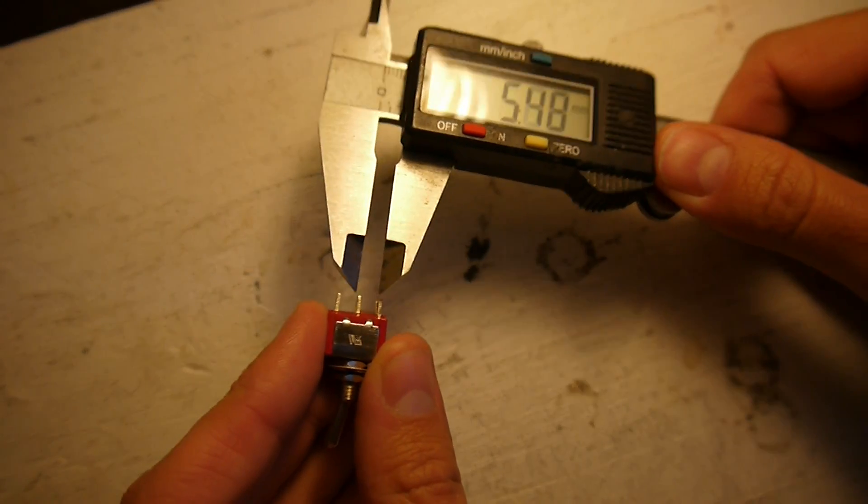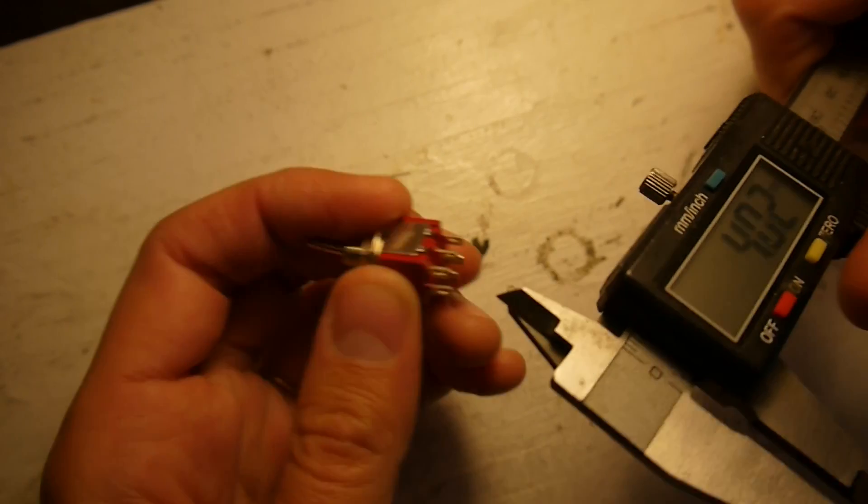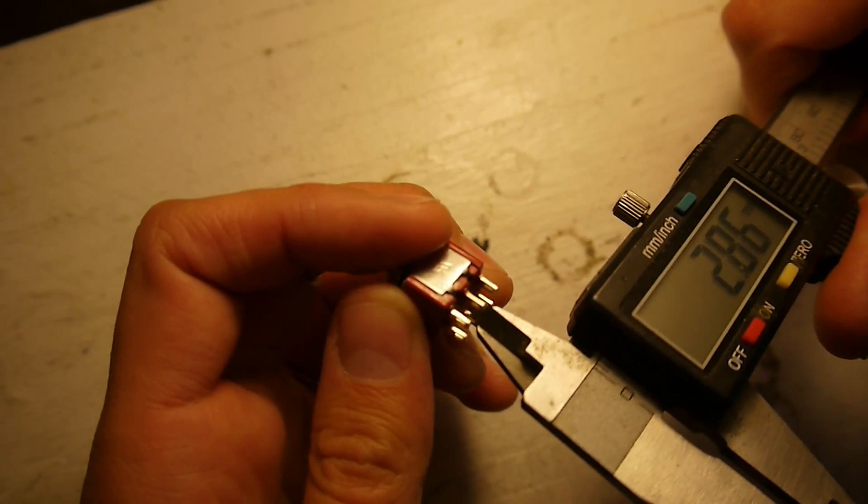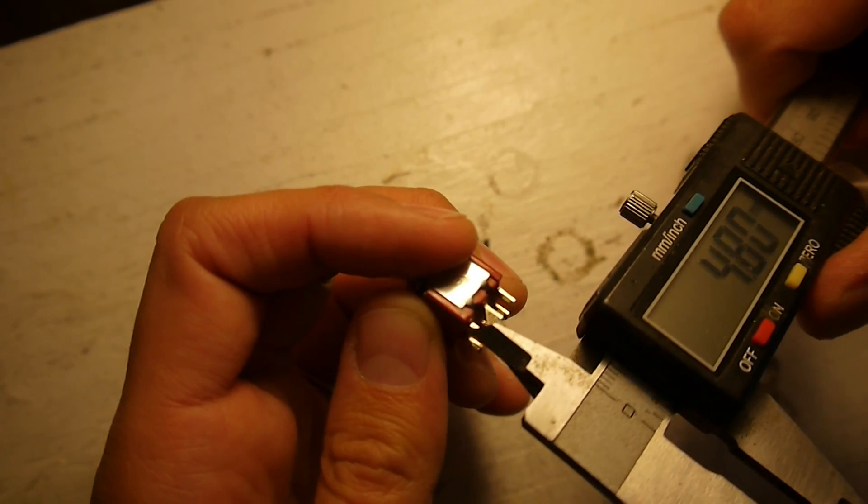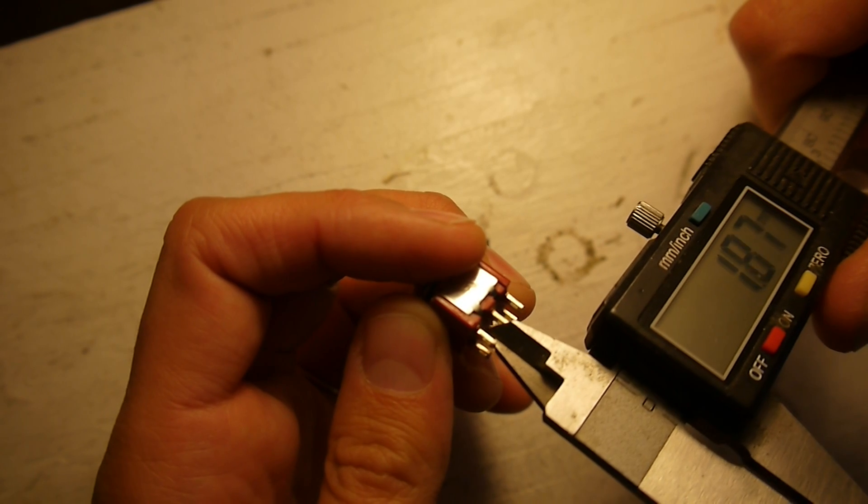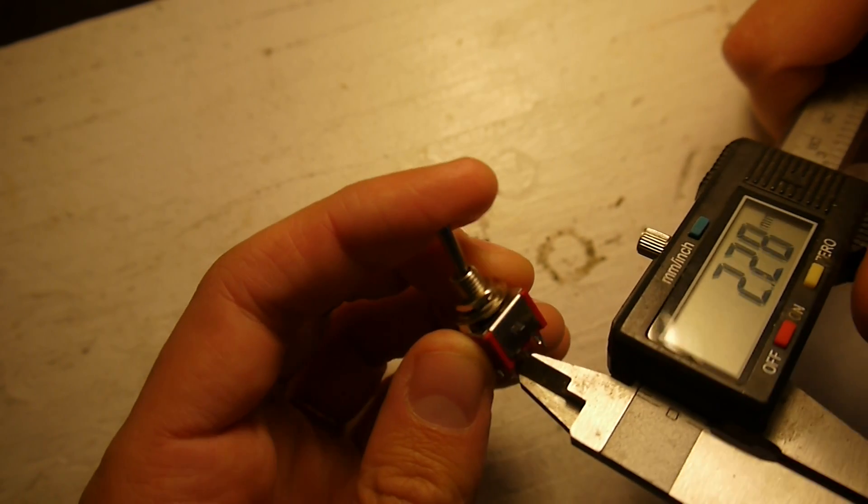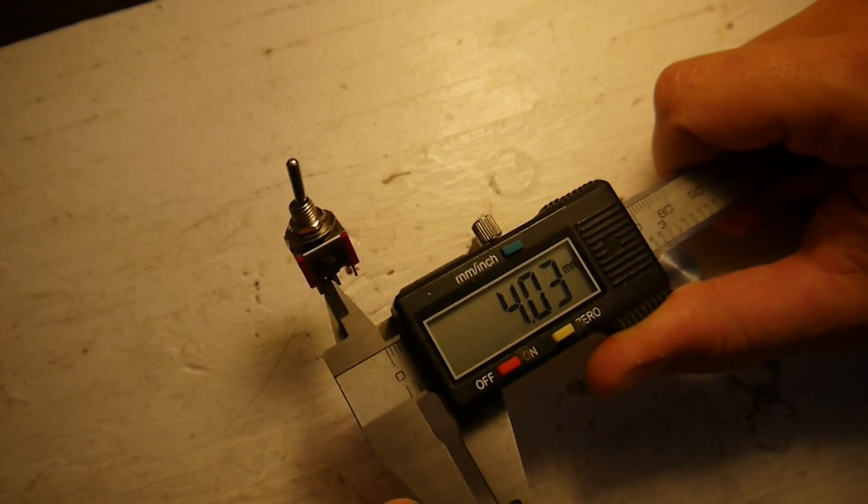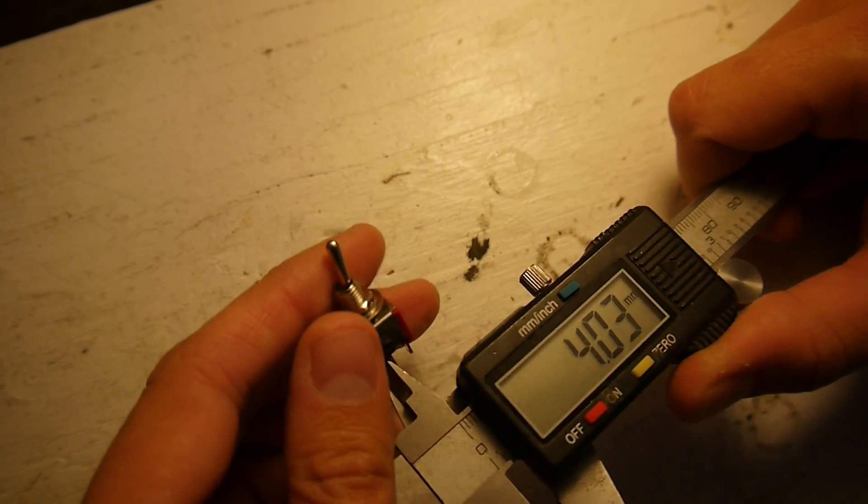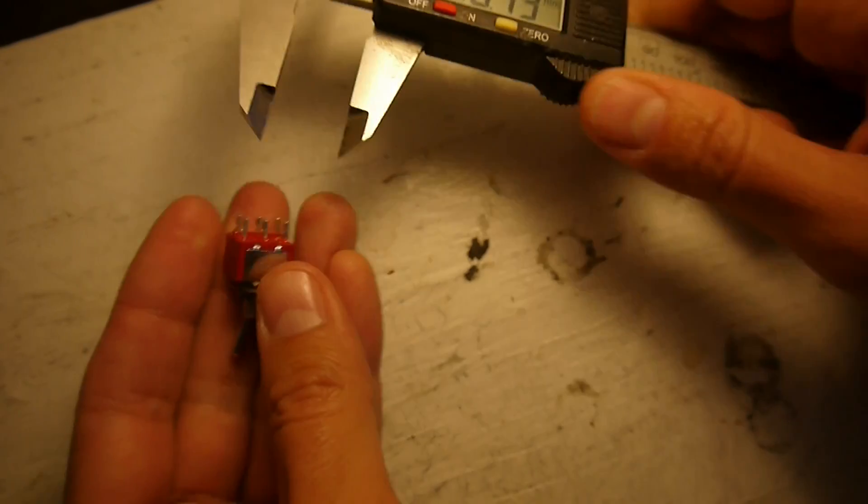And then, let's see if we can do, let's do it this way. This is harder than I thought. That would be easier. Okay, so that's 4 millimeters on the inside, and then it was 5.5 on the outside.